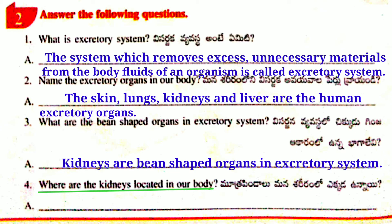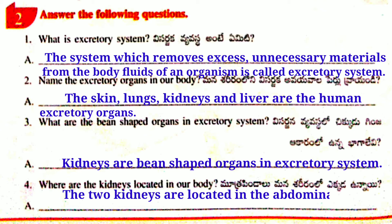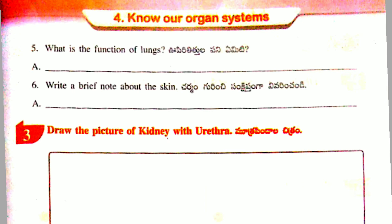Answer: The two kidneys are located in the abdominal cavity, one on either side of the spine. Fifth Question: What is the function of lungs?